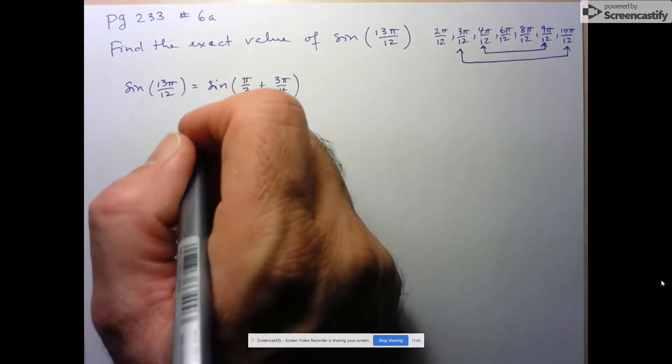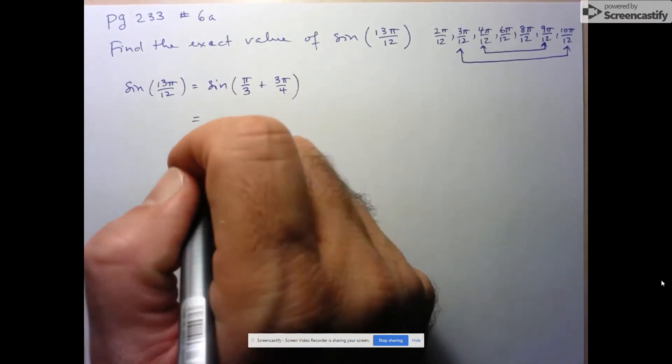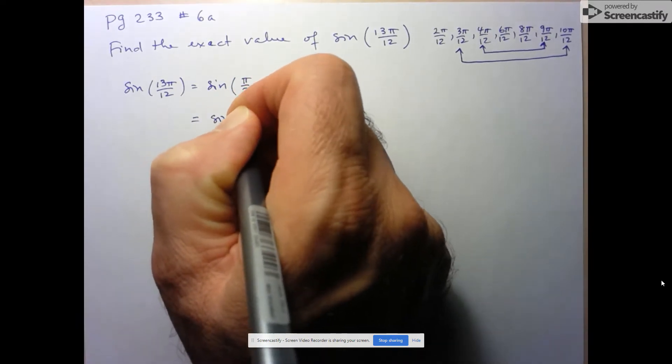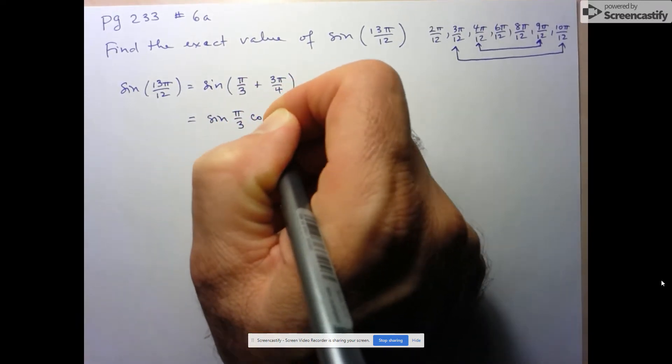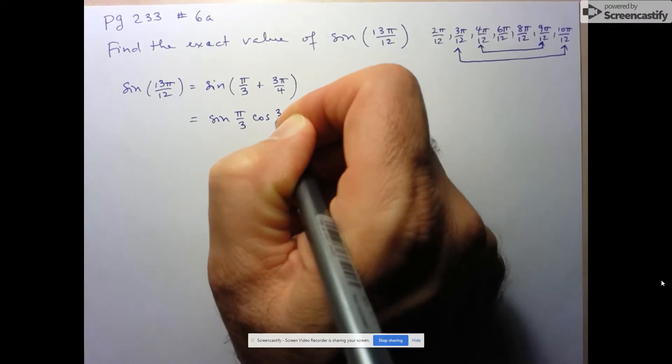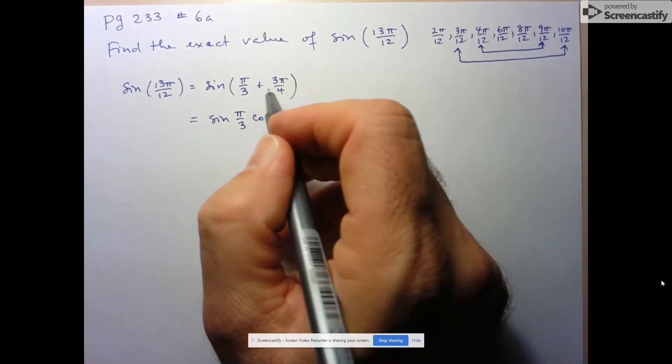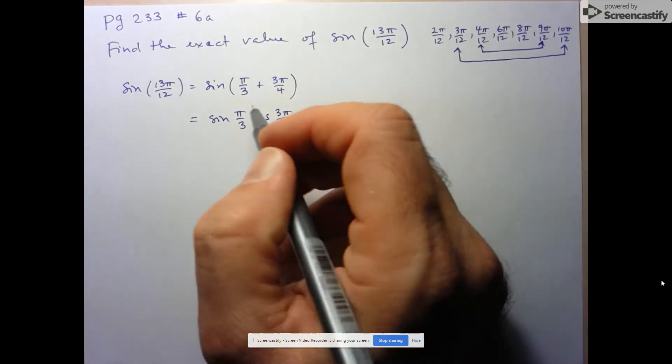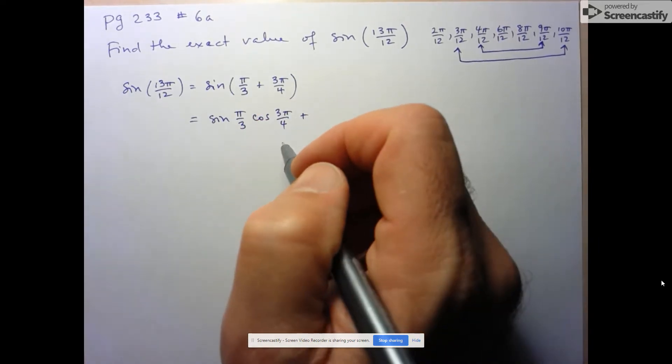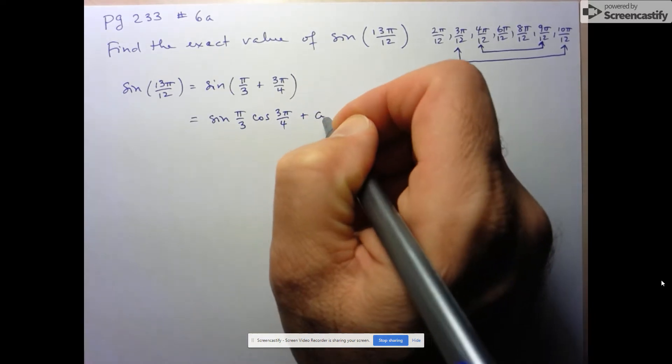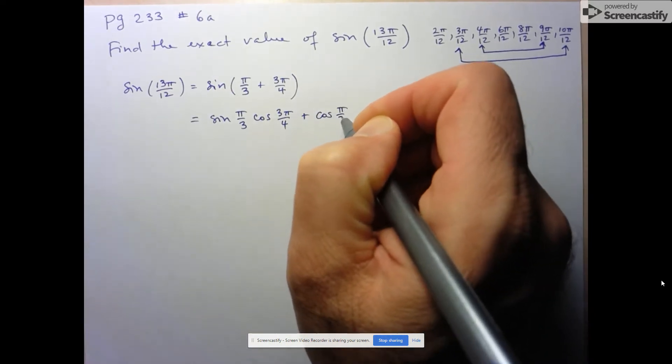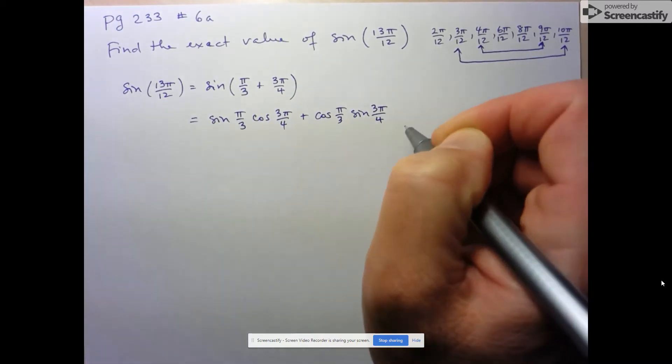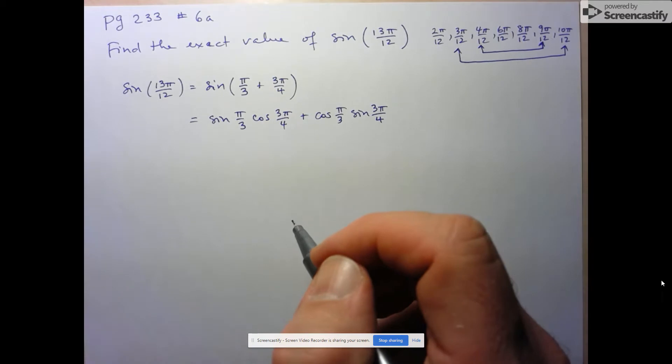Now that I have this format, I can use my new identity. It's sine of the first angle, so sine of π over 3, times cos of the second angle, so cos of 3π over 4. Then it's plus. With sine, the sine stays the same—maybe that's a way of remembering that. With cosine, it's always the opposite. So now I've got cosine of the first times sine of the second. Try to start figuring out a way to remember this relationship.